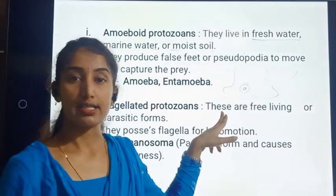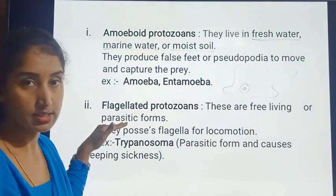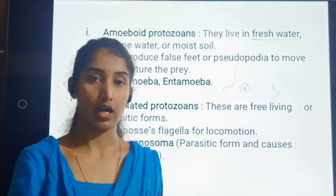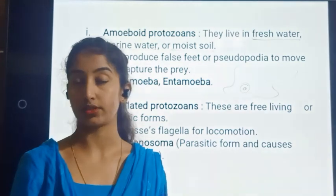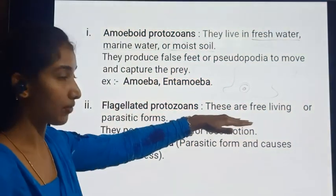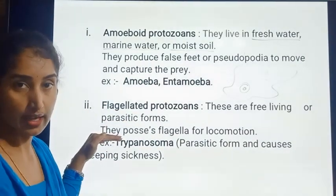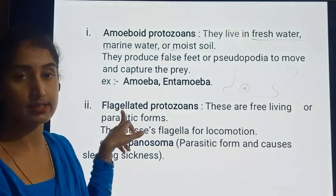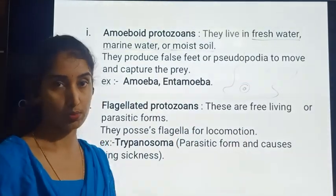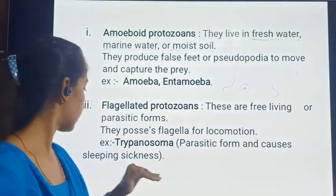Flagellated protozoans are free-living or parasitic in form. Parasitic means these organisms harm other organisms to derive their nutrition and may also cause diseases. They possess flagella for locomotion. Example: Trypanosoma, which is a parasitic form and also causes sleeping sickness.